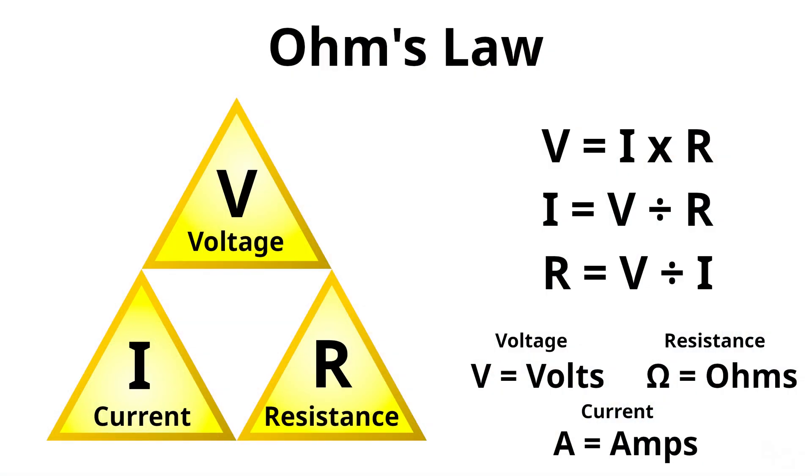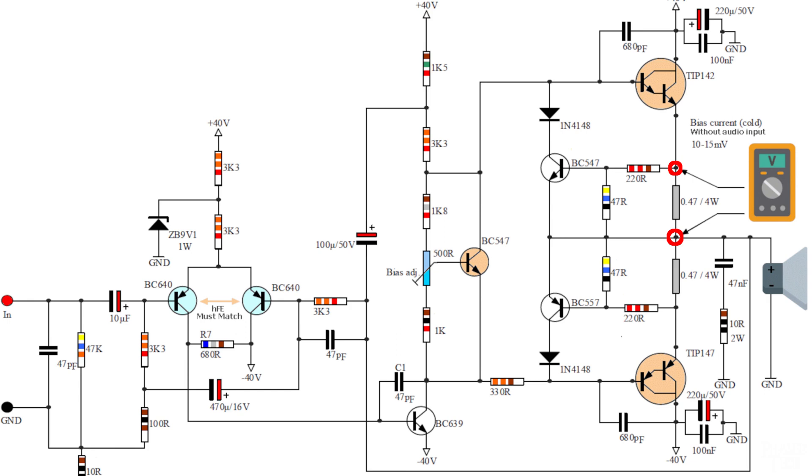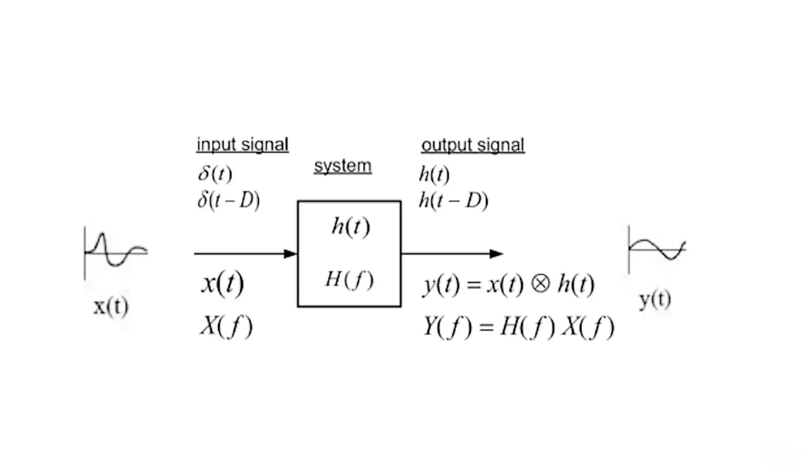So, as I talked about in the first video, every electrical current will have an associated voltage, current, and resistance value to it. As you can imagine, these properties will change depending on which part of the circuit you're looking at. If you were to measure, let's say, the voltage at various sections of the circuit, then you'd expect to get different readings. After all, that's the point of adding all these resistors, capacitors, and other components. They're there to modify the signal in such a way that it's useful.